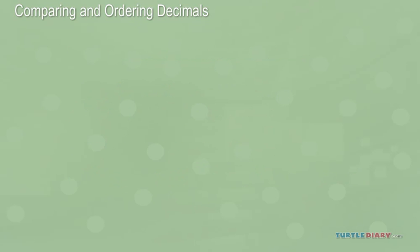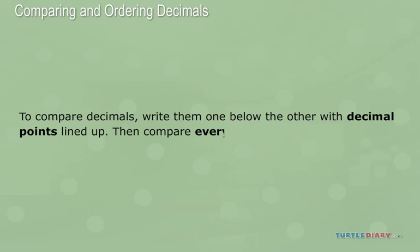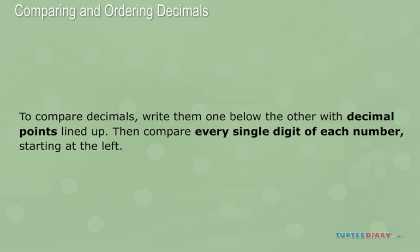To compare decimals, write them one below the other with decimal points lined up. Then compare every single digit of each number, starting at the left.